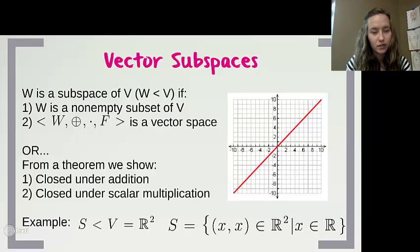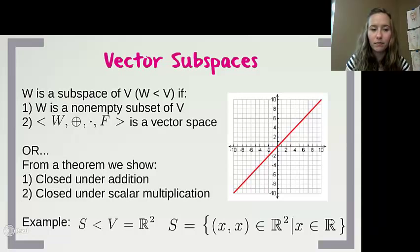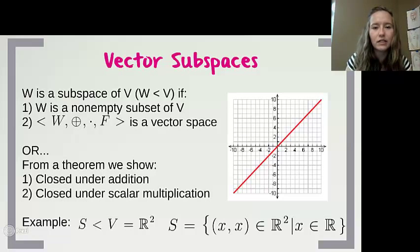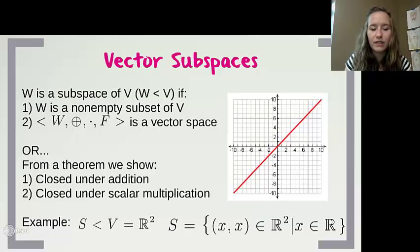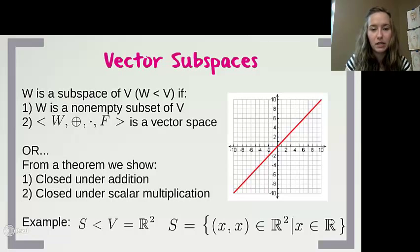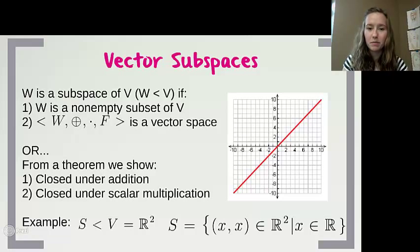A vector subspace is a set of vectors that is a subset of our vector space, and that subset W also needs to be a vector space itself. To show both of these things takes many steps, but from a theorem, you can show that if a set of vectors is closed under addition, closed under scalar multiplication, and is a subset of the vector space, then it is a vector subspace.